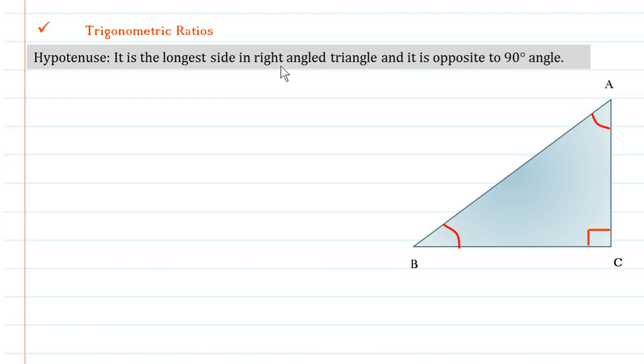It is the longest side in a right-angled triangle and it is opposite to 90 degree angle. Actually, you cannot get the hypotenuse wrong, it is very easy to remember and name it.